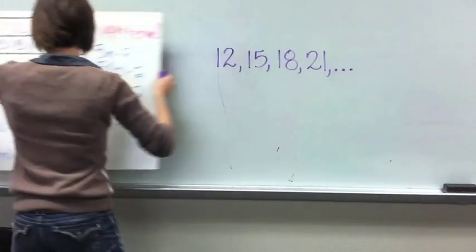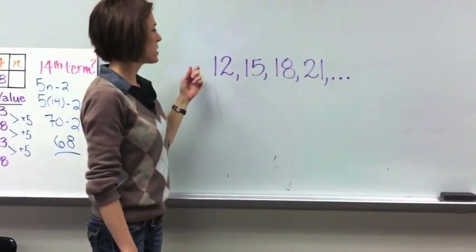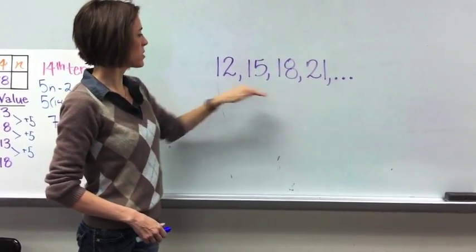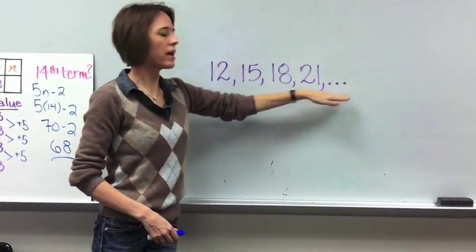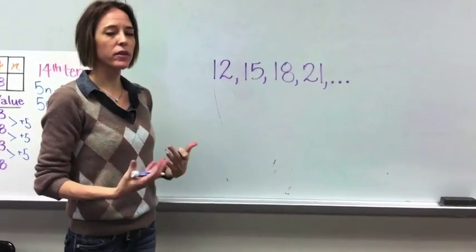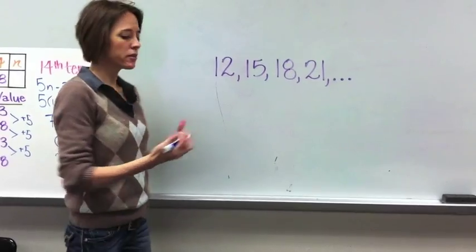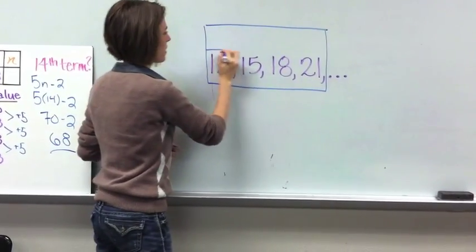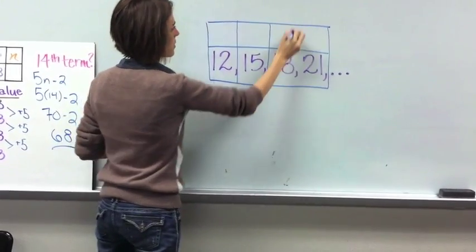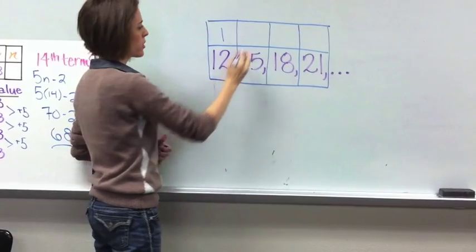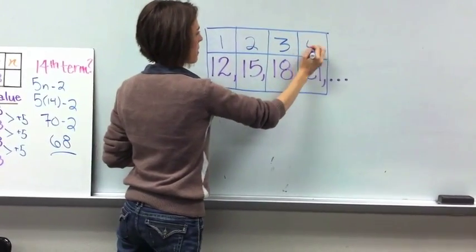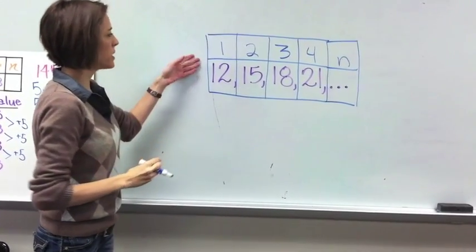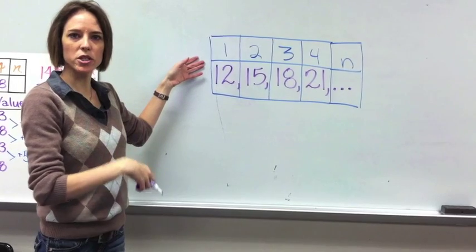Let's move on to example 2. In example 2, it's giving you a sequence written like this. It looks different because the last one was already in the form of a table. This one is just a sequence of numbers: it starts at 12, goes to 15, 18, 21, and the dots indicate it repeats in a pattern. Before you set up your table, I want you to use this technique: draw a box around each number in that sequence to make sure that you have the right term number. So this is the first term, this is the second term, the third term, and the fourth term, and the next one would be the nth term.